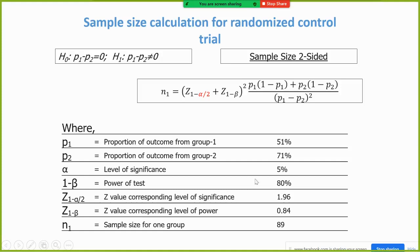Then from normal distribution, the Z value corresponding to alpha is 1.96, and the value of Z beta is 0.84. Then if we put the value in this formula, then the required sample size will be 89 per group.